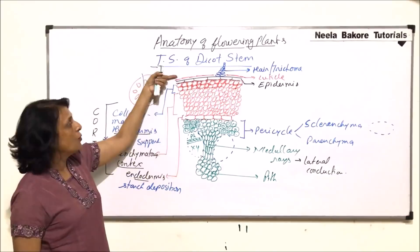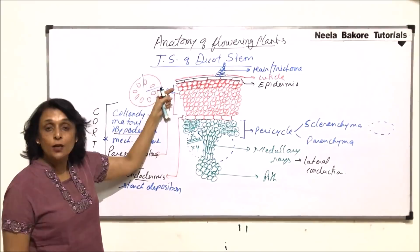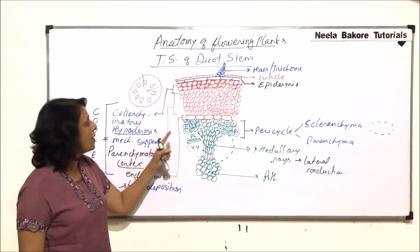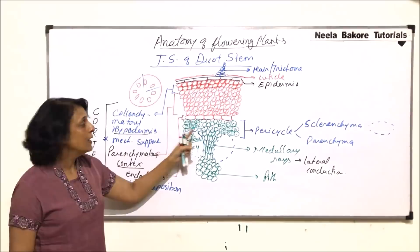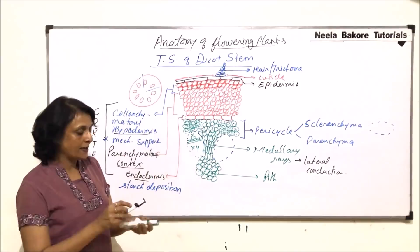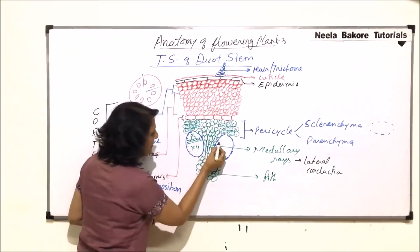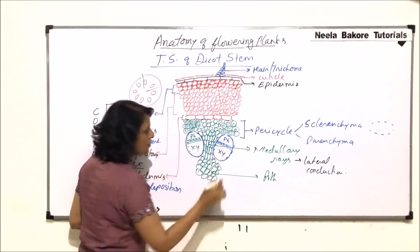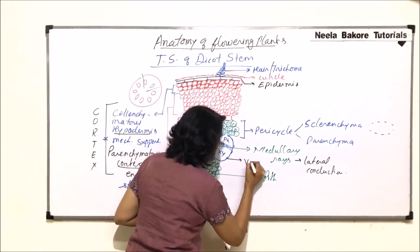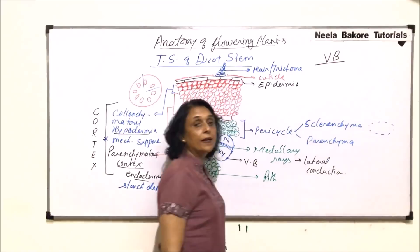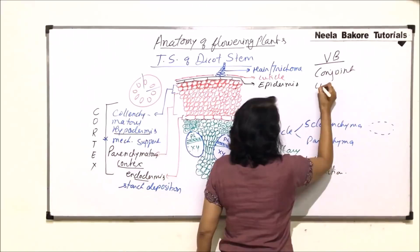So the structures from outside to inside are: epidermis, which may be covered with cuticle; then hypodermis, which is collenchymatous in dicot stem; then parenchymatous cortex; endodermis, rich in starch; pericycle, which has parenchyma and sclerenchymatous patches. The sclerenchymatous patches are just above the phloem. Now, in the vascular bundle there are cambium strips, with phloem on the outer side and xylem on the inner side.